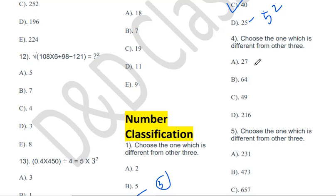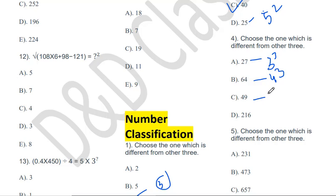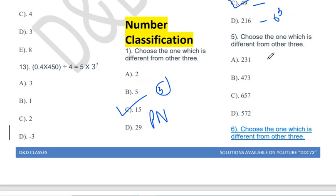Choose the one which is different from the other three: 27, 64, 49, 216. We can easily see that 27 is the cube of 3, 64 is the cube of 4, and 216 is the cube of 6. But 49 is the square of 7, not a perfect cube. So the odd one out is 49.